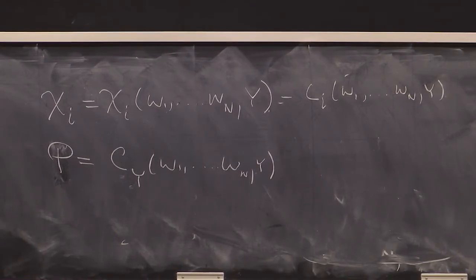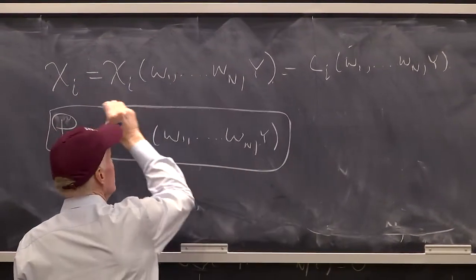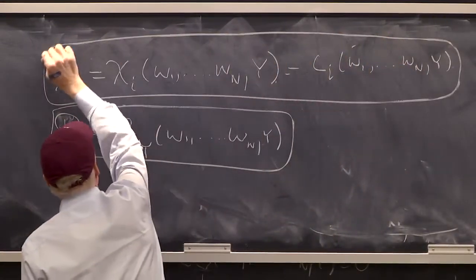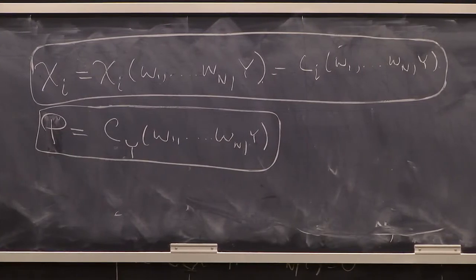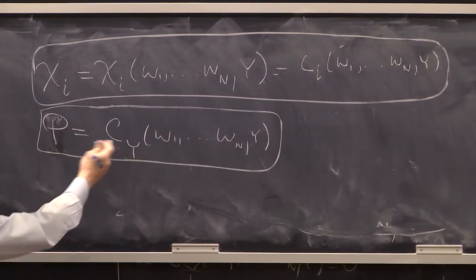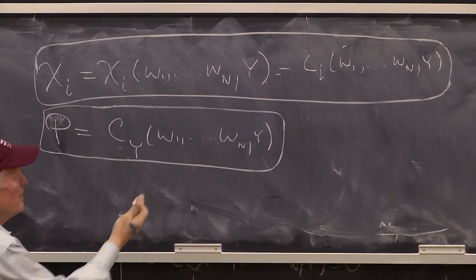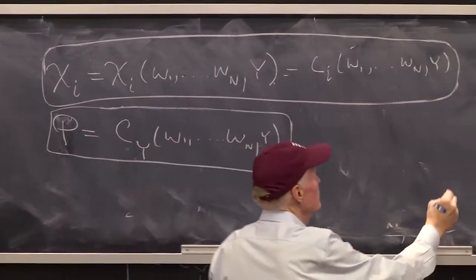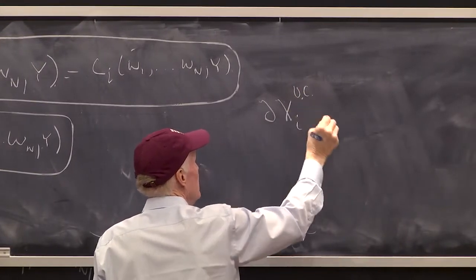Well, just think about it. We want to make Y endogenous. We want to simultaneously satisfy this equation and satisfy that equation. We're just going to allow Y to vary in such a way that it holds this equation in bounds. So we totally differentiate, but allowing Y to change. So the first equation gives us the unconditional response: partial Xi with respect to Wi.